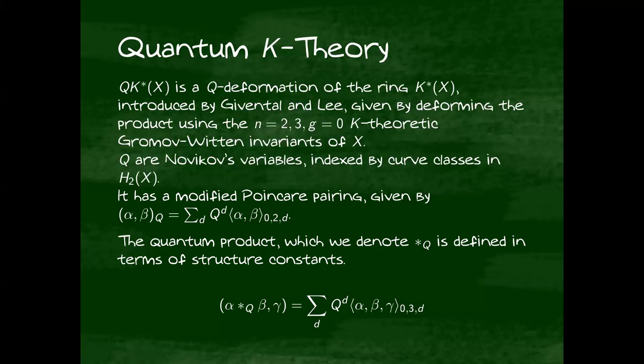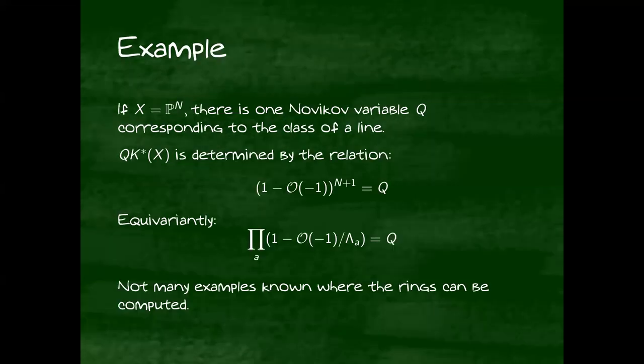And then after that, the quantum product is defined in terms of the three-point Gromov-Witten invariants. If you look at them as structure constants with respect to the quantum pairing, what we mean is the degree d part of the quantum product of alpha beta paired with gamma is the degree d three-point Gromov-Witten invariants alpha beta gamma. Again, if these are structure sheaves, this represents the number of curves passing through alpha beta gamma of degree d and genus 0.